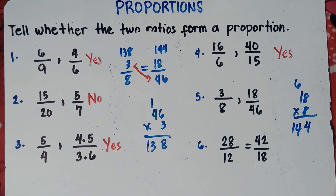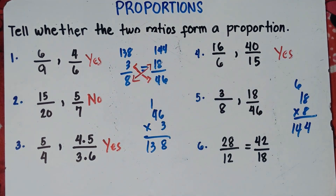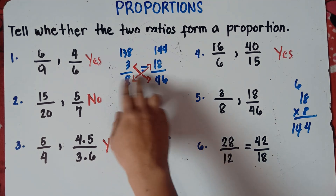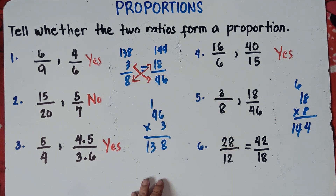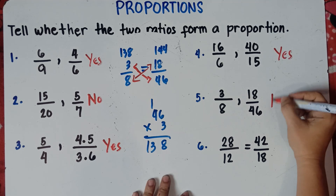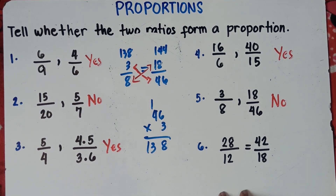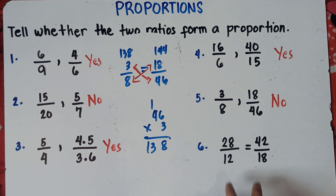They don't have the same answer. When you do the cross multiplication, the product of means is not equal to the product of extremes. Therefore, for number 5, our answer is no — these two ratios will not form a proportion. You try number 6 and put your answer in the comment section down below. Let me check if you really understand our topic today.